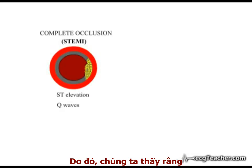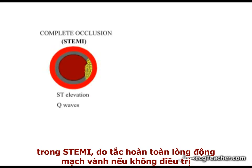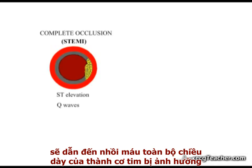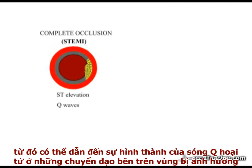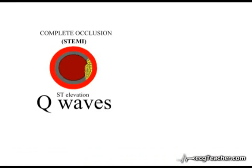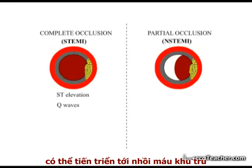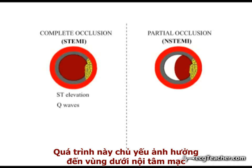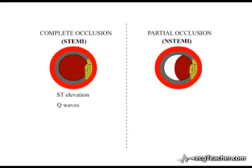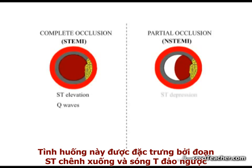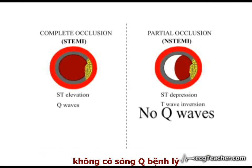In ST elevation MI, untreated complete arterial occlusion may progress to infarction of the full thickness of the affected myocardial wall, associated with development of pathological Q waves in the leads overlying the dead muscle. In contrast, partial occlusion may progress to localised infarction, the process tending to focus on the subendocardium, characterised by depression of the ST segment and/or T wave inversion. Q waves do not generally develop.